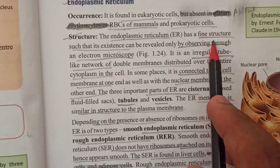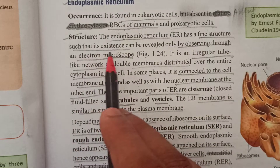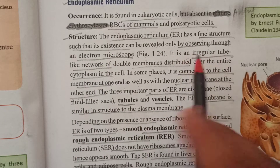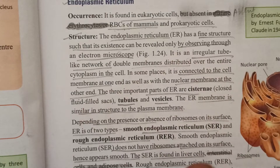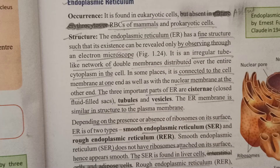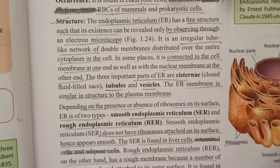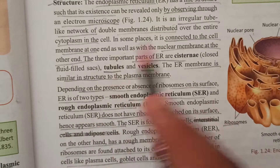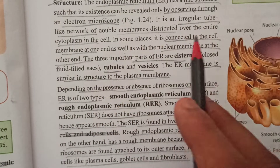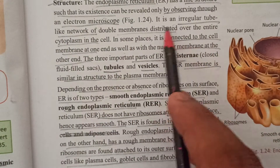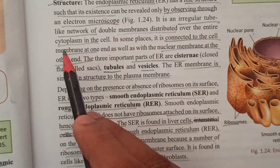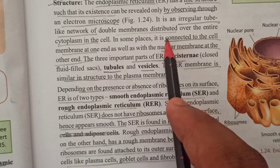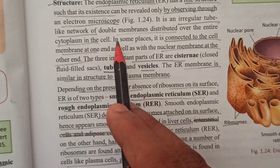Endoplasmic reticulum has a very fine structure. Its existence can only be observed by electron microscope - it cannot be seen with a normal microscope. It is made of irregular tubes like a network of double membranes.